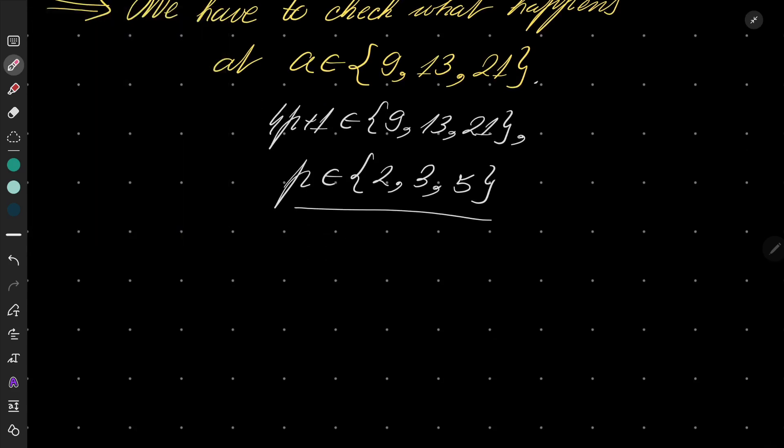If p equals 2, then what happens? 1 plus p plus p squared plus p cubed plus p to the fourth power is 1 plus 2 plus 4 plus 8 plus 16.